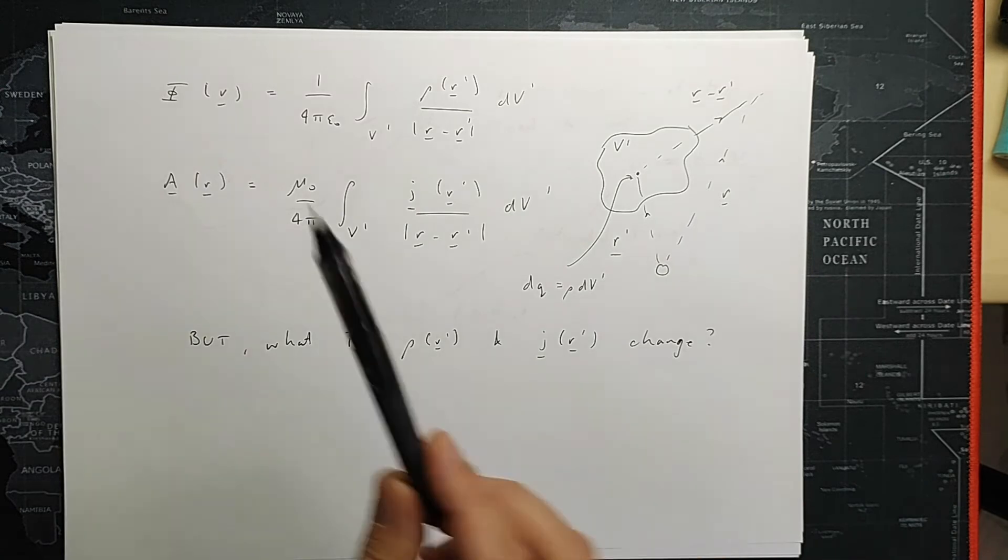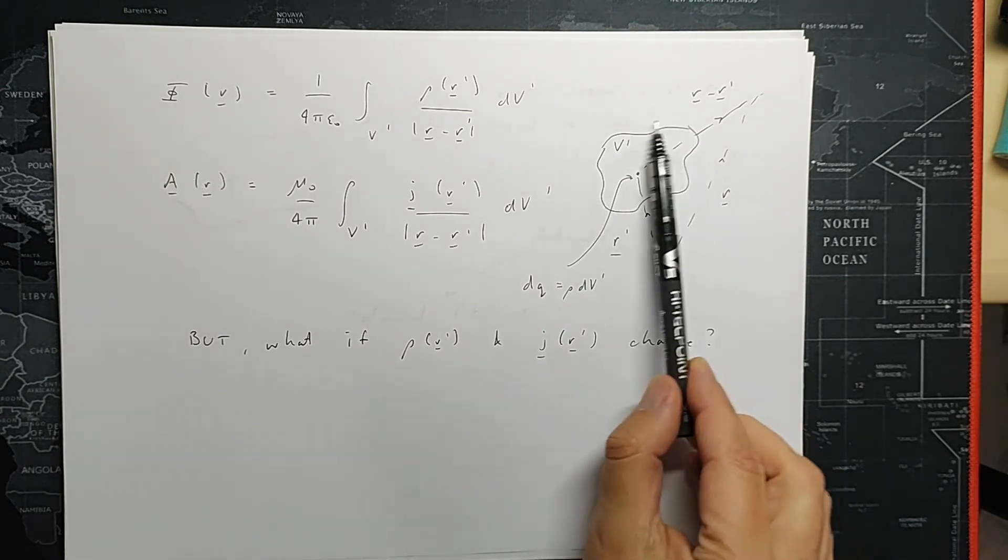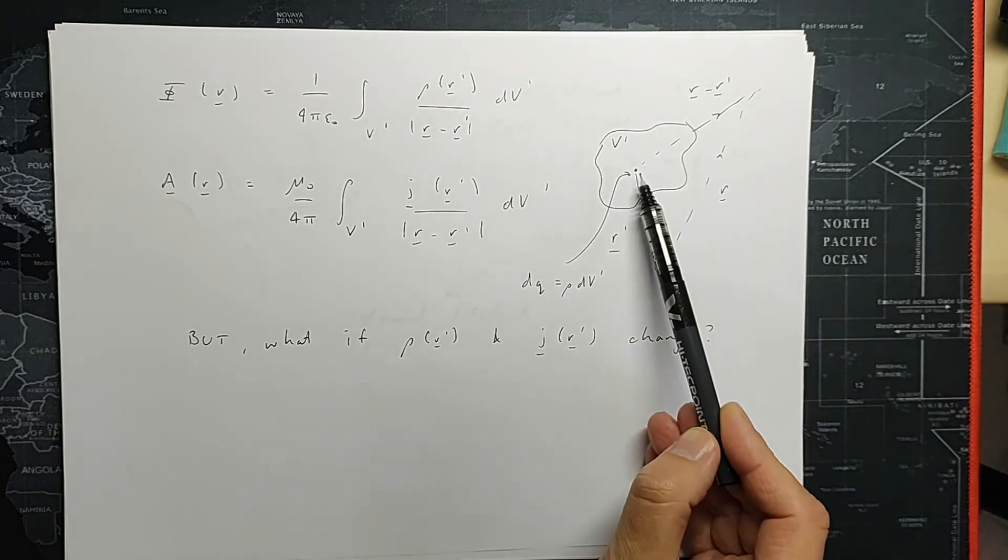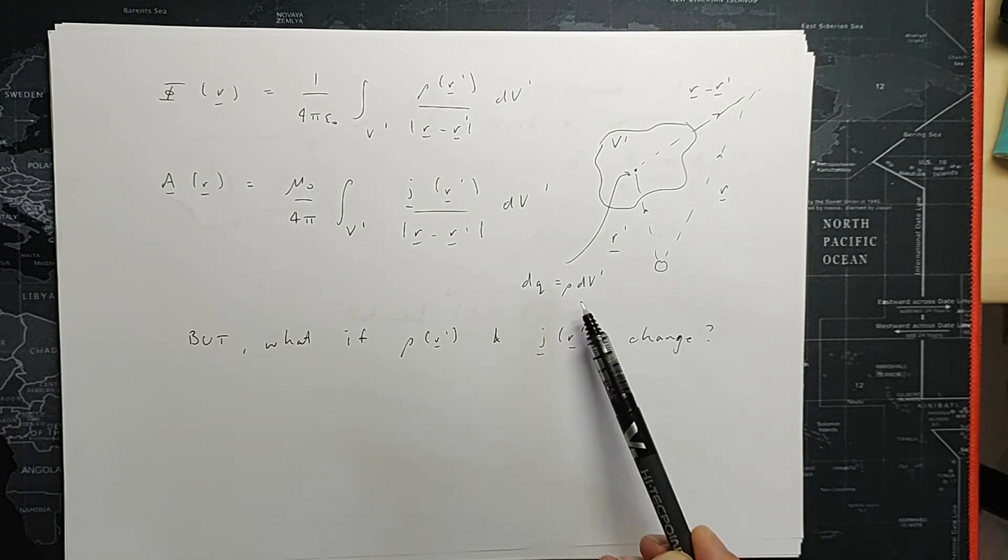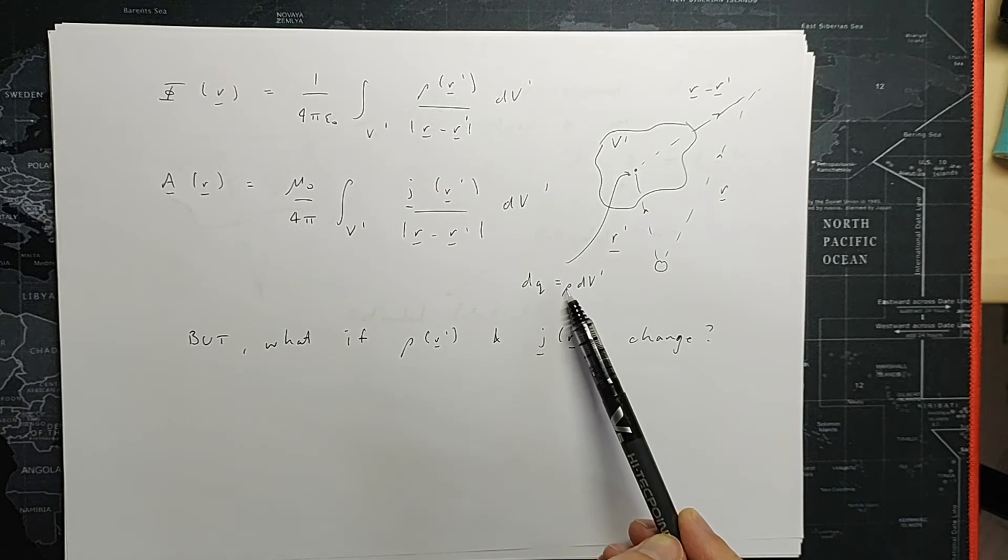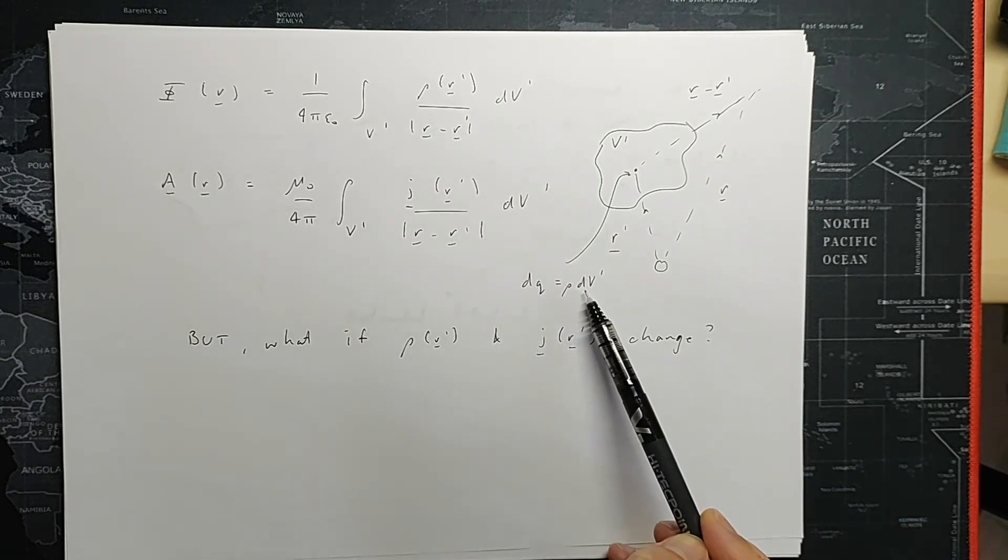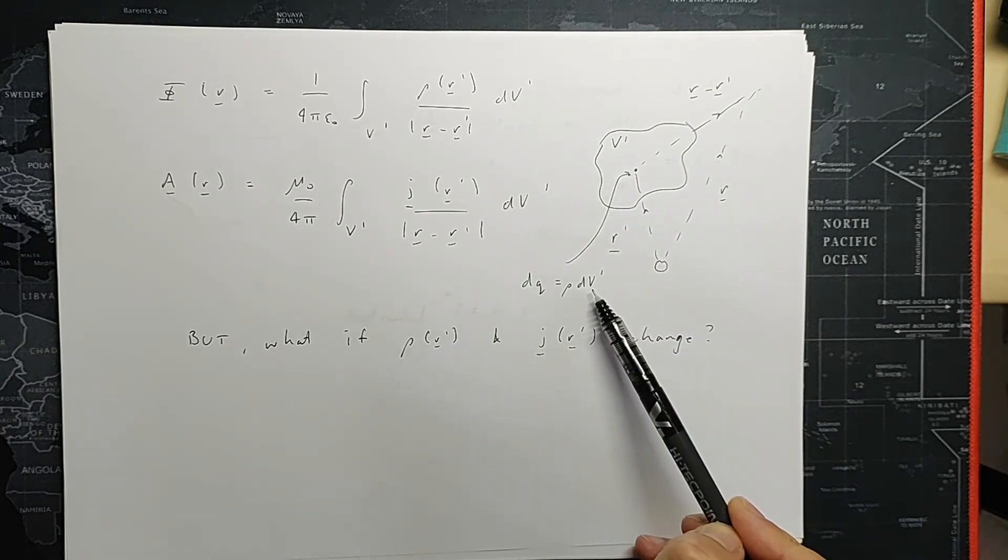So let's look at that in a bit more detail. Here is our static case. So I have some volume V, over which there may be some charges and currents. So for example, in this location here, I will have an amount of charge dQ, which is due to some charge density at that location, rho, rho of R primed, in that small element of the overall volume V primed, dV primed.